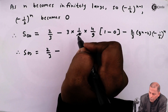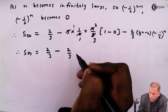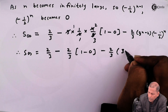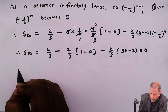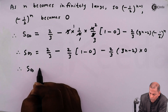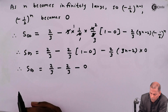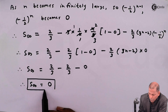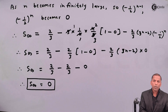Therefore the sum to infinity is S_∞ = 2/3 - (2/3)·1 - (2/3)·(3n-2)·0 = 2/3 - 2/3 = 0. So in this case the sum to infinity of the arithmetico-geometric progression is S_∞ = 0. This is the required solution for the given problem. Thank you.